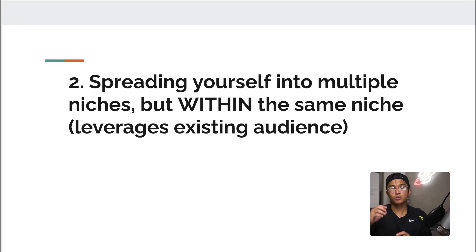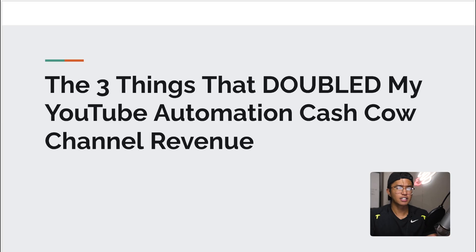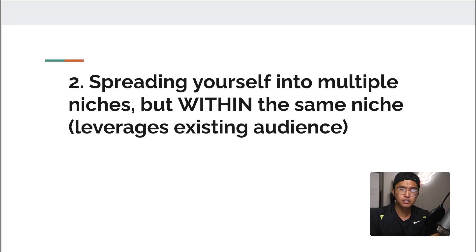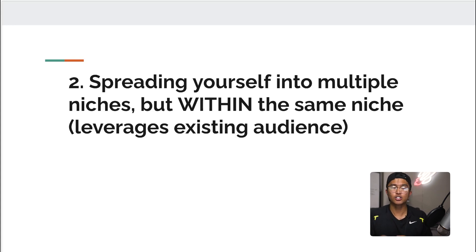Moving on to the second thing — tying back to the title, the three things that doubled my YouTube automation cash cow channel revenue, this is an accumulated total across all my channels. The second thing is spreading yourself into multiple niches but within the same niche, which allows you to leverage your existing audience. If you're going to start more channels, ideally your first channel should cover the overhead, and going within the same niche lets you leverage that existing audience.